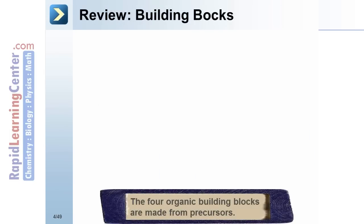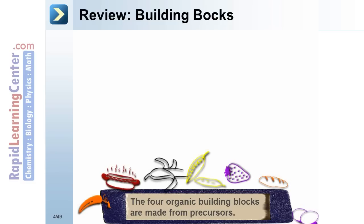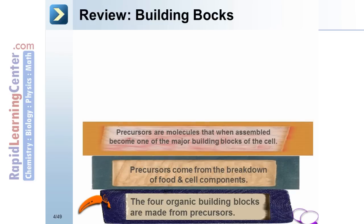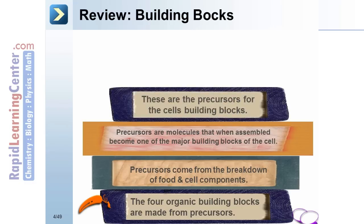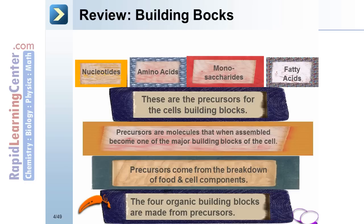The four organic building blocks are made from precursors. Precursors come from the breakdown of food and cell components. Precursors are molecules that, when assembled, become one of the major building blocks of the cell. The precursors for the cell's building blocks are nucleotides, amino acids, monosaccharides, and fatty acids.